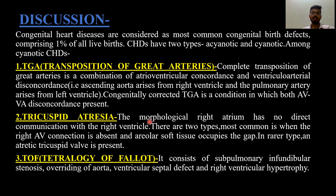Tricuspid atresia is a condition in which the morphological right atrium has no direct communication with the right ventricle. There are two types: the most common is when the right atrioventricular connection is absent and fibrofatty soft tissue occupies the gap; in the rarer type, an atretic tricuspid valve is present. Tetralogy of Fallot consists of sub-pulmonary infundibular stenosis, overriding of the aorta, ventricular septal defect, and right ventricular hypertrophy.